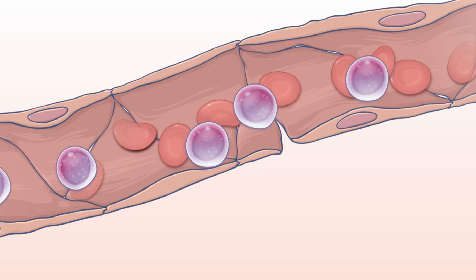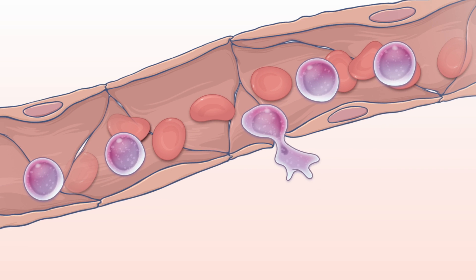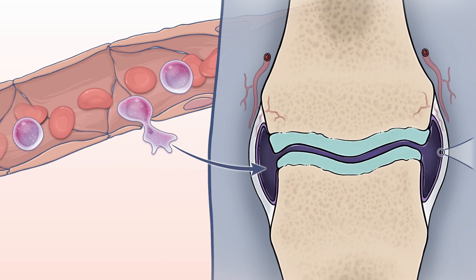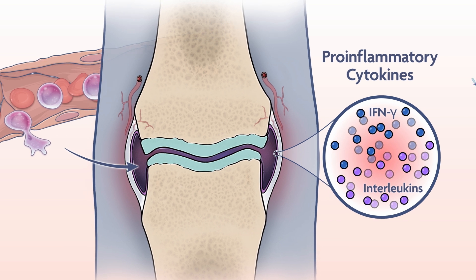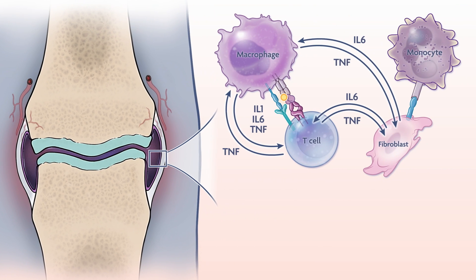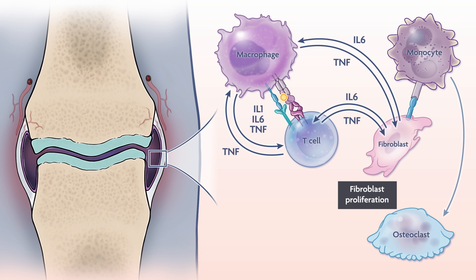Many of these immune cells migrate through the blood to the synovium, where they release pro-inflammatory cytokines like interferon gamma and interleukins. This triggers neighboring cells — such as macrophages, monocytes, and synovial fibroblasts — to release cytokines, notably TNF, IL-6, and IL-1. As a result, synovial fibroblasts proliferate, contributing to joint inflammation.